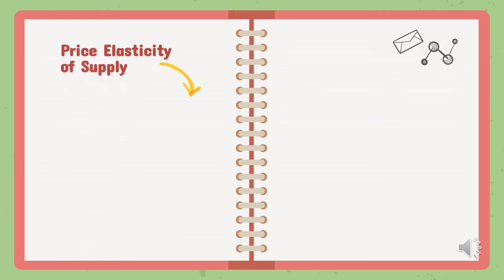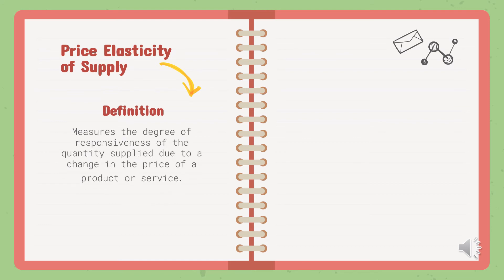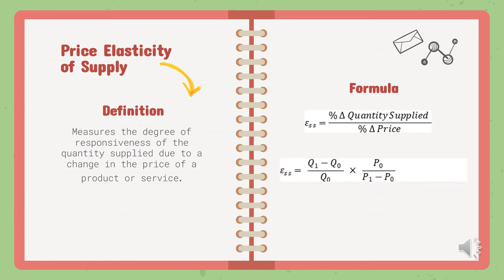Price Elasticity of Supply is similar to elasticity of demand; however, it measures the degree of responsiveness of the quantity supplied due to a change in the price of a product or service. The formula is the percentage change in quantity supplied divided by the percentage change in price. Alternatively, you can use: (new quantity minus old quantity) divided by old quantity, multiplied by old price divided by (new price minus old price).